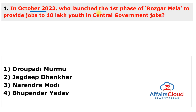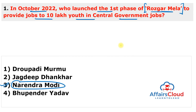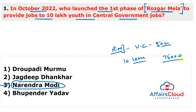Let's start the weekly current affairs for the fourth week of October 2022, covering 25th to 31st October 2022. First question: in October 2022, who launched the first phase of Rojgar Mela to provide jobs to 10 lakh youth in central government jobs? The answer is Prime Minister Narendra Modi, who launched the first phase of Rojgar Mela through video conferencing at 50 centers across India. It was a recruitment drive for 10 lakh central government jobs where appointment letters were handed over to more than 75,000 newly appointed persons.